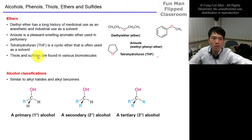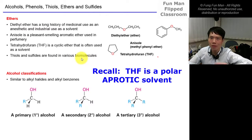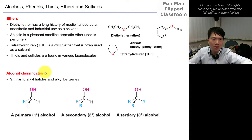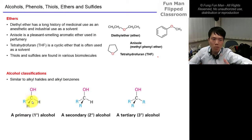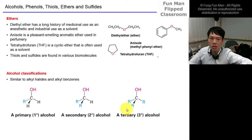Thiols and sulfites are found in many biomolecules in the body and in enzymes. Now for alcohol classification and nomenclature — very similar to alkyl halides. Primary alcohol: carbon attached to an OH group with one R group. Secondary alcohol: two R groups. Tertiary alcohol: three R groups.